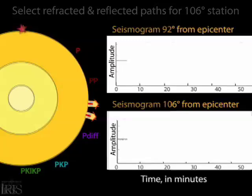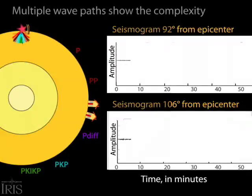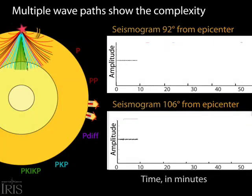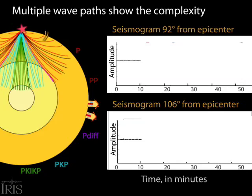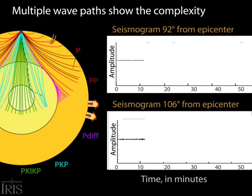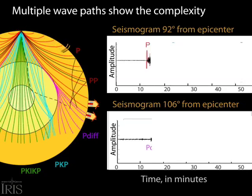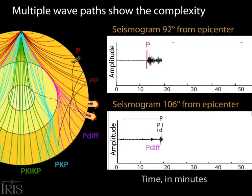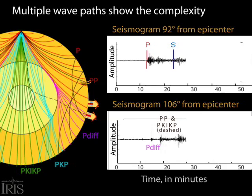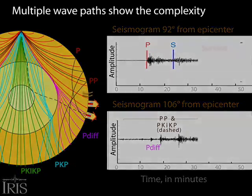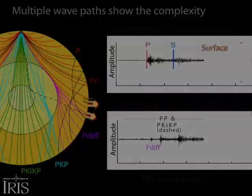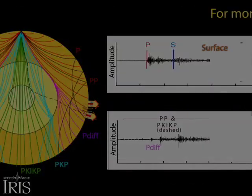Let's take a broader view of arrivals at all distances from the epicenter. Body waves reflect, refract, and diffract at boundaries throughout the earth, creating a complexity of arrivals at all distances. This complexity permits us to learn incredible things about the dimensions and properties of the deep earth.